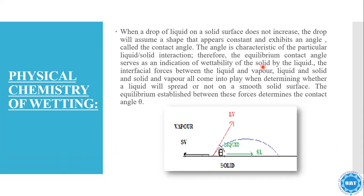Physical chemistry of wetting: when a drop of liquid on a solid surface does not spread, the drop will assume a shape that appears constant and exhibit an angle called the contact angle. The angle is a characteristic of a particular liquid-solid interaction. Therefore, equilibrium contact angles serve as an indication of the wettability of the solid by the liquid. The interfacial forces between the liquid and vapour, and liquid and solid, all come into play when determining whether the liquid will spread or not on smooth surfaces.